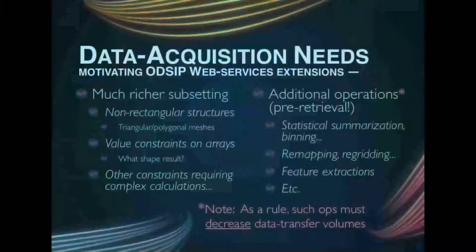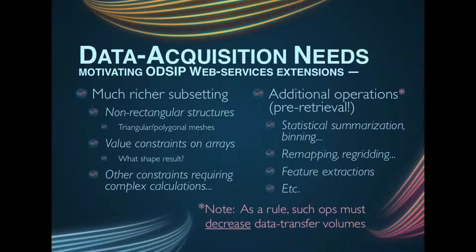We're motivated to create EarthCube building blocks that address these limitations and, more generally, respond to changes in the data acquisition needs of geoscientists in a highly networked world. Needs for subsetting now increasingly must handle non-rectangular structures such as triangular meshes, or select portions of arrays that satisfy specified value constraints. Once the door to such pre-retrieval calculations is open, we think the basic notion of data acquisition can and should be extended to statistical summarization, binning, remapping, re-gridding, feature extraction, and other functions.